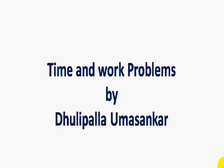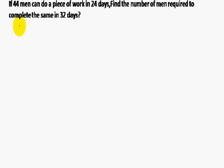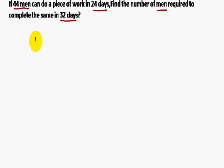Today we are going to discuss time and work problems. The first problem is: 44 men can do a work in 24 days. Find the number of men required to complete the same work in 32 days. If you observe the problem, you come across two words: men and days.